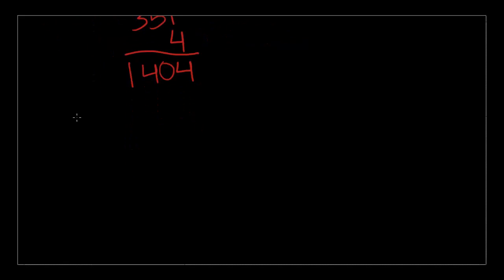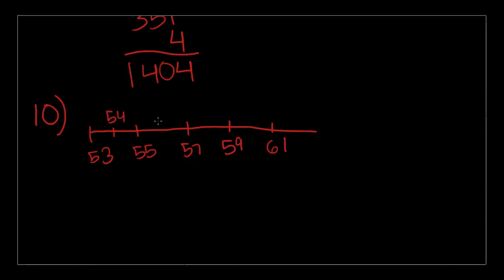Number 10, which I will, for once, do in the same color as the last problem. What is the coordinate of the point on a number line that is exactly halfway between the points with coordinates 53 and 62? Let's draw out this number line as straight as I can. This goes from 53 to 62. I'm doing it in 2s, 54, 58, 60, 61, 62.